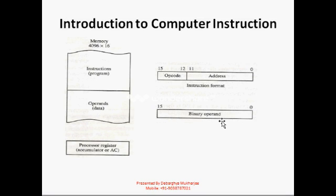Now I am coming to the binary operand. Before we understand binary operand, we are going to discuss how any computer program is made of. Any computer program is made of two things: one is instructions, and another one is called data or operand. Whenever any program resides within RAM, the computer divides it into these two parts — instructions remain in one part, and operand or data remains in another part.